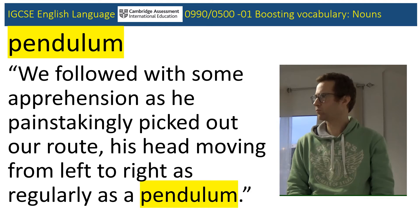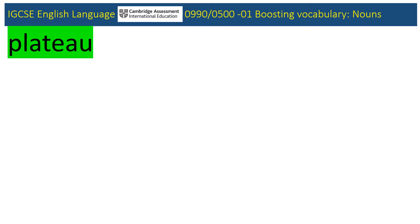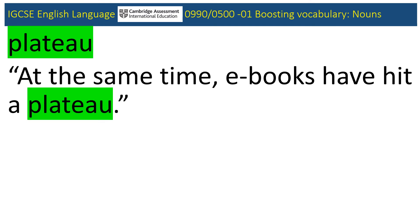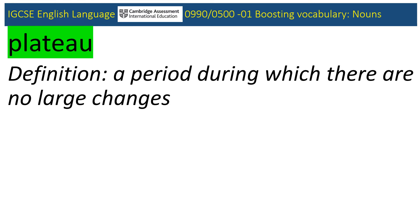Next noun: plateau, which appeared in the June 2020 0990 paper. The article is about books. A comparison is made between the sales of paper books fighting back, and e-books, which have hit a plateau. Define plateau. In other words, the sales of e-books have remained pretty flat. People have realised that there's nothing better than the feel of a real paper book, even if it is second-hand.